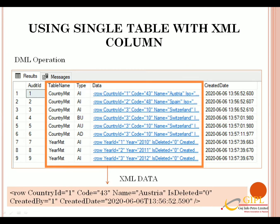Now let's start the second method: audit trail with a single table using an XML data column. In this method, we use only one audit table. As you can see here, two tables' entries are stored in a single table. Data is stored as XML type and displayed accordingly.